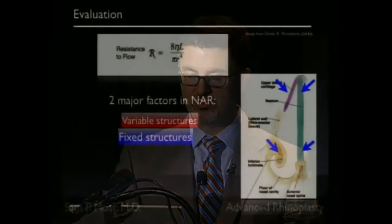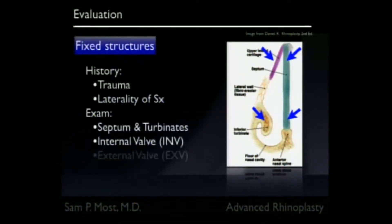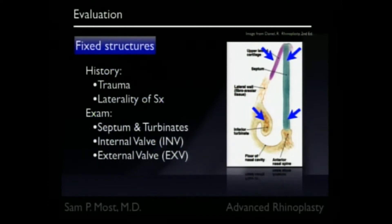The other major category of nasal obstruction would be fixed obstructions — things that don't change. Fixed structures include the septum, the upper lateral cartilage, this angle up here which we call the internal valve area, which we'll be talking about more shortly. Also the size of the turbinate bone, which doesn't change — all the things underneath that mucosa.